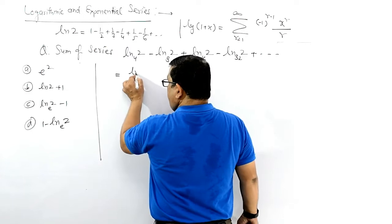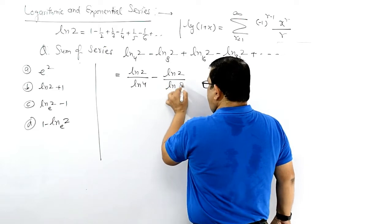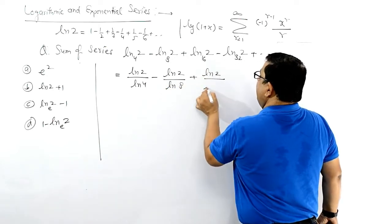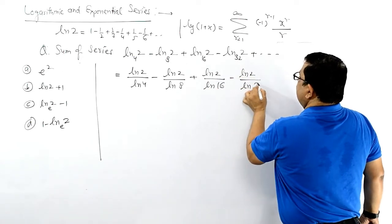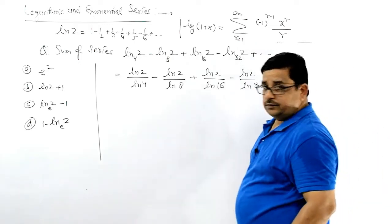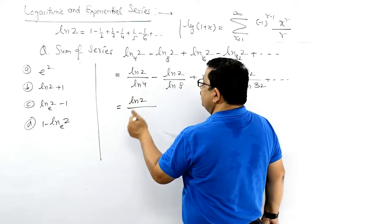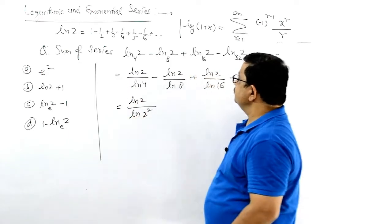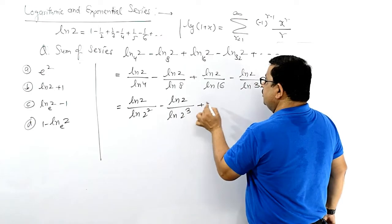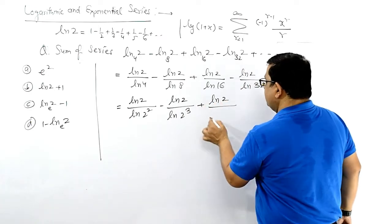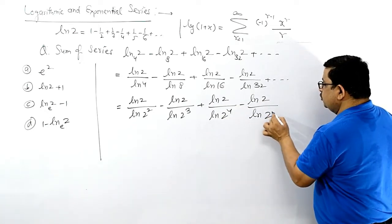तो इसको लिखेंगे: ln2 by ln4 minus ln2 by ln8 plus ln2 by ln16 minus ln2 by ln32 और इस तरह से यह चला जाएगा। फिर एक और काम करें — यह ln2 है, इसको लिख सकते हैं: ln2 by ln(2²) minus ln2 by ln(2³) plus ln2 by ln(2⁴) minus ln2 by ln(2⁵).